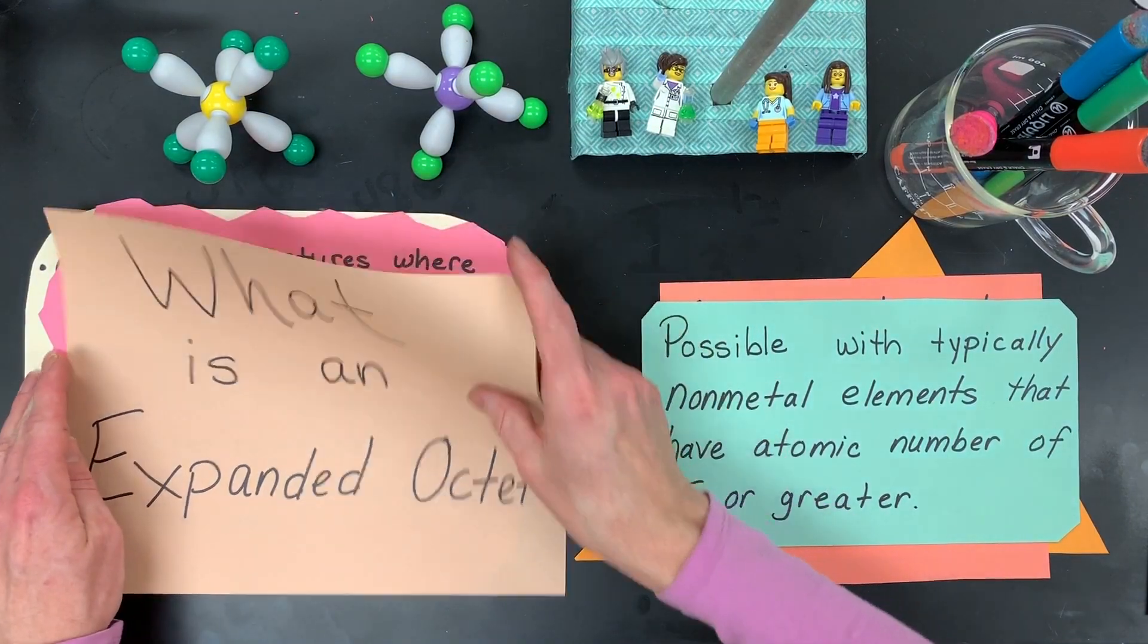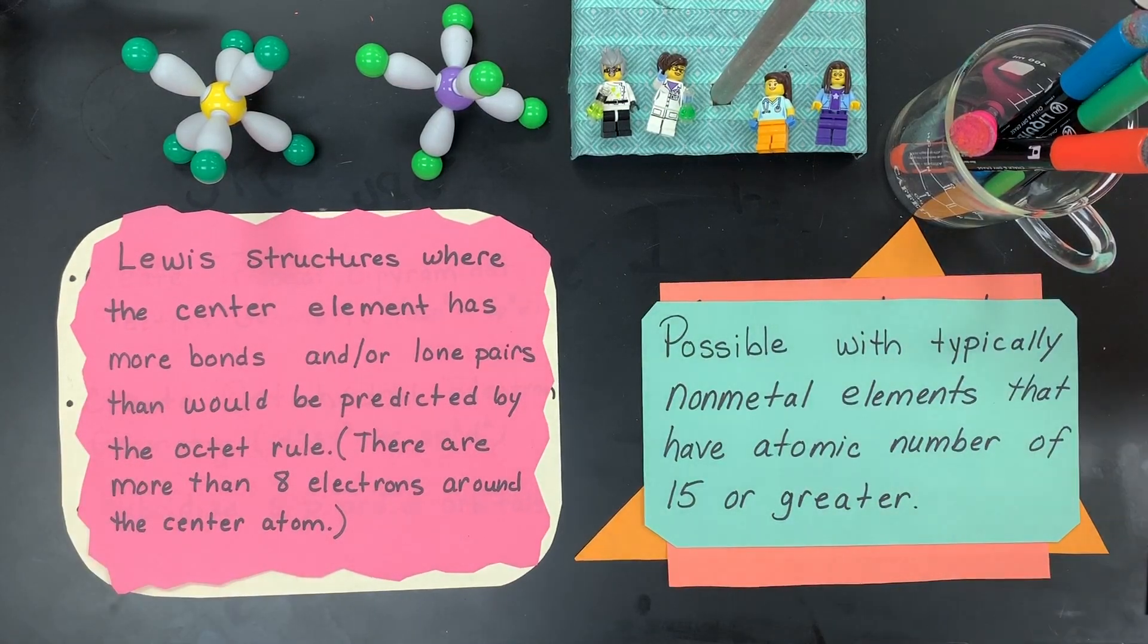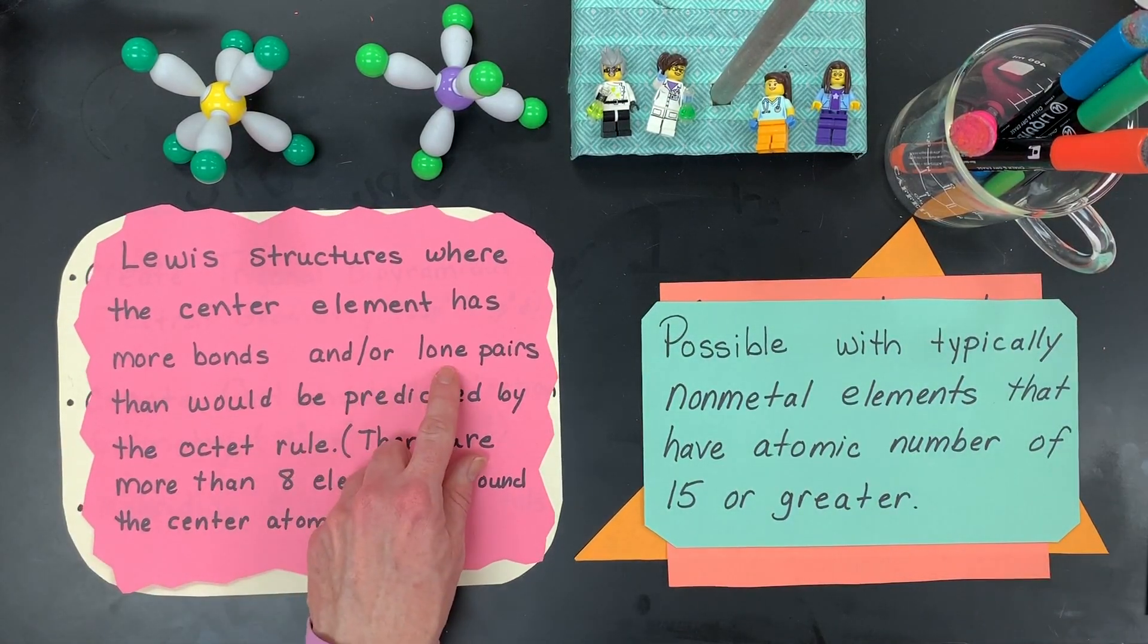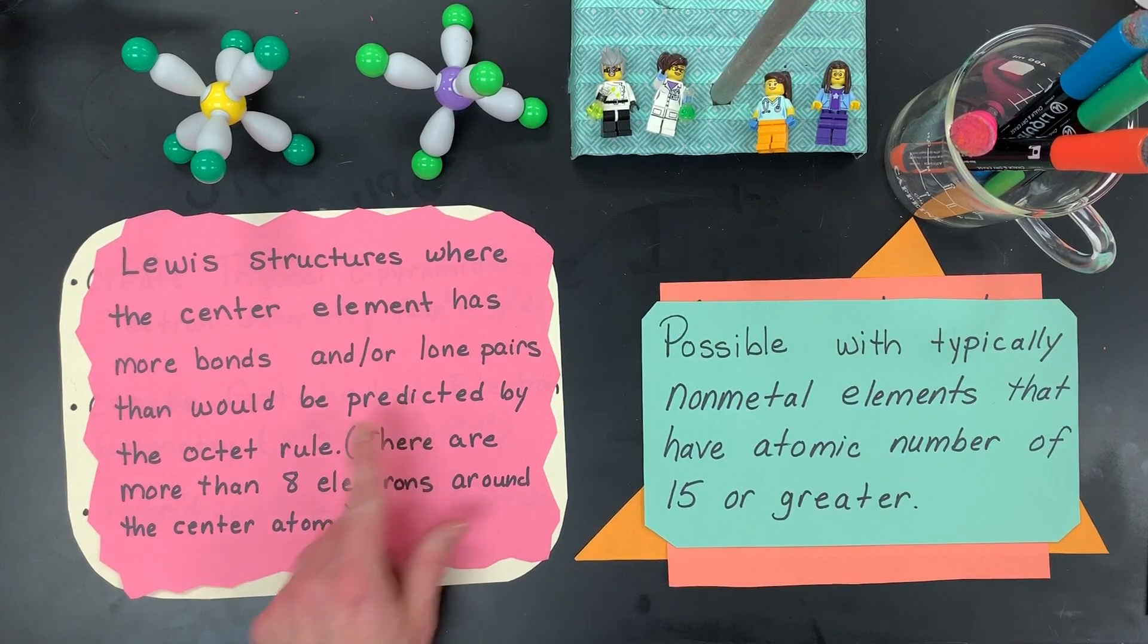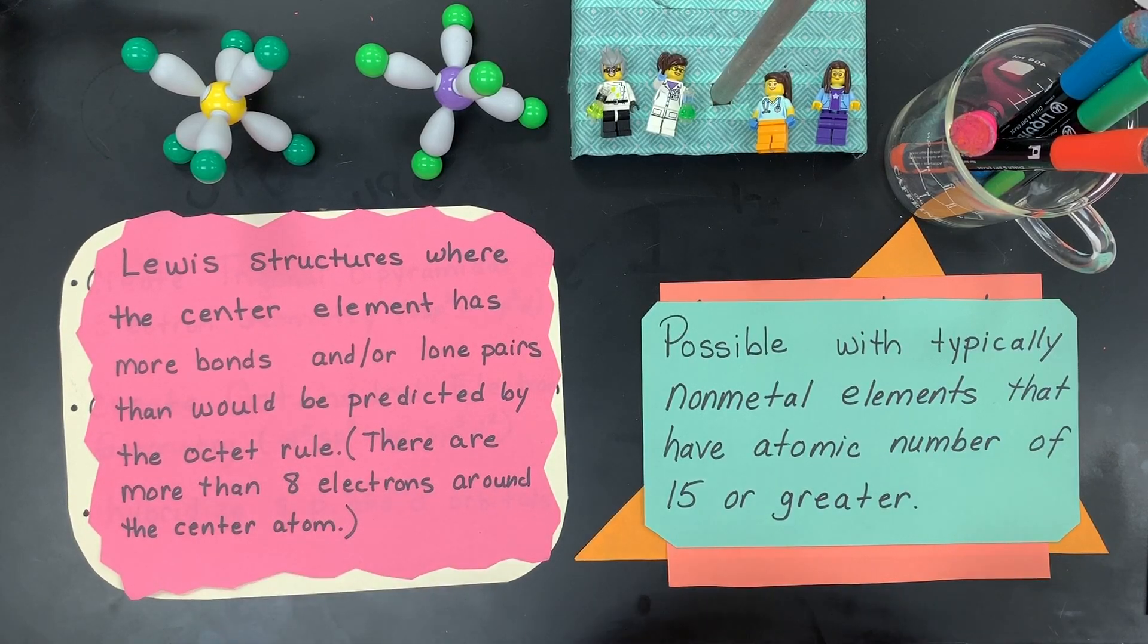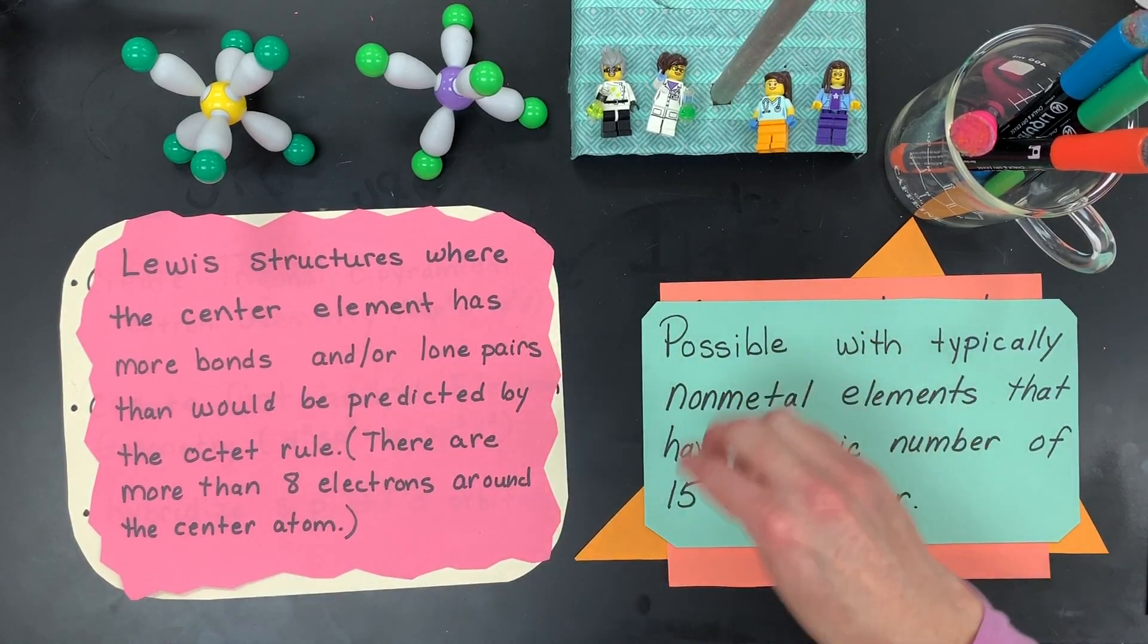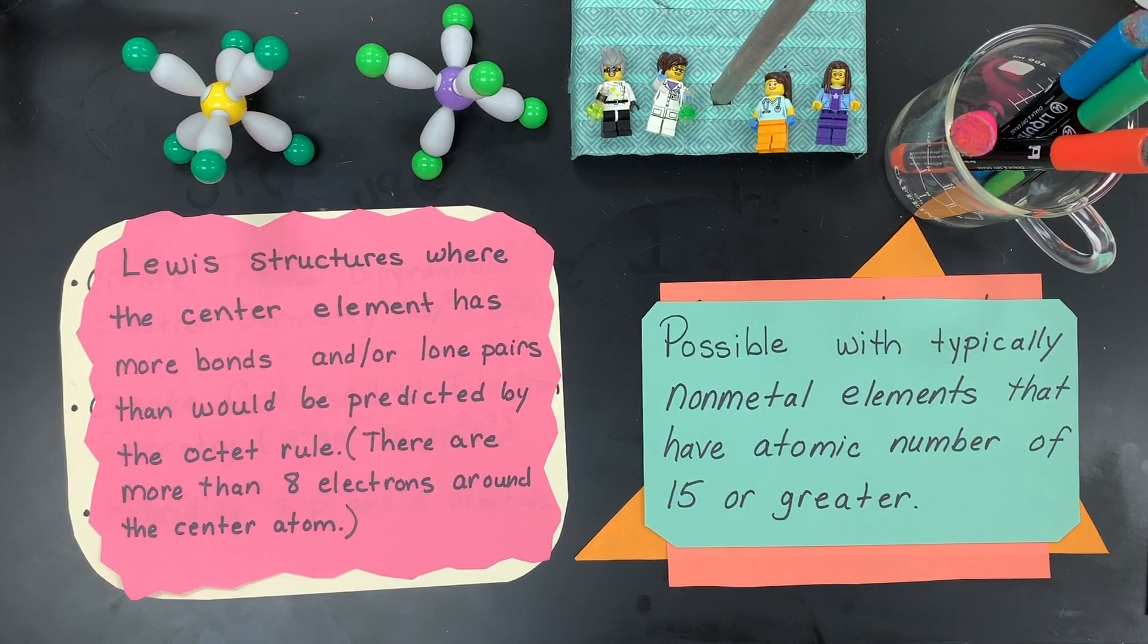What is an expanded octet? It's a Lewis structure where the center element has more bonds and or lone pairs than would be predicted by the octet rule. That means there's more than eight electrons around that center atom as it bonds in a molecule.